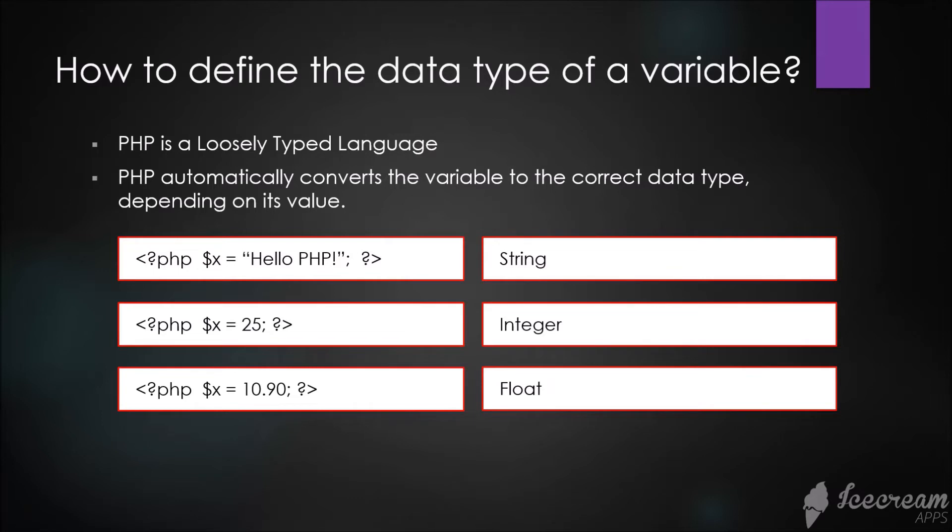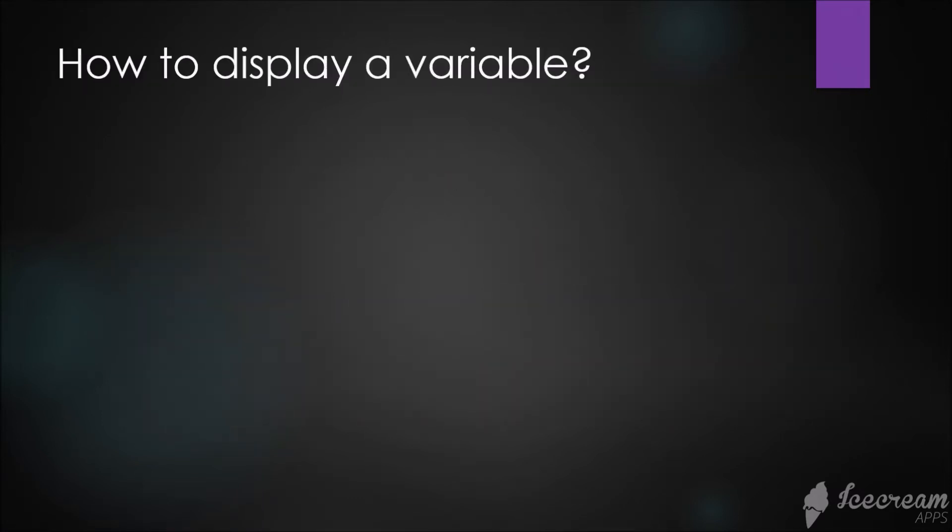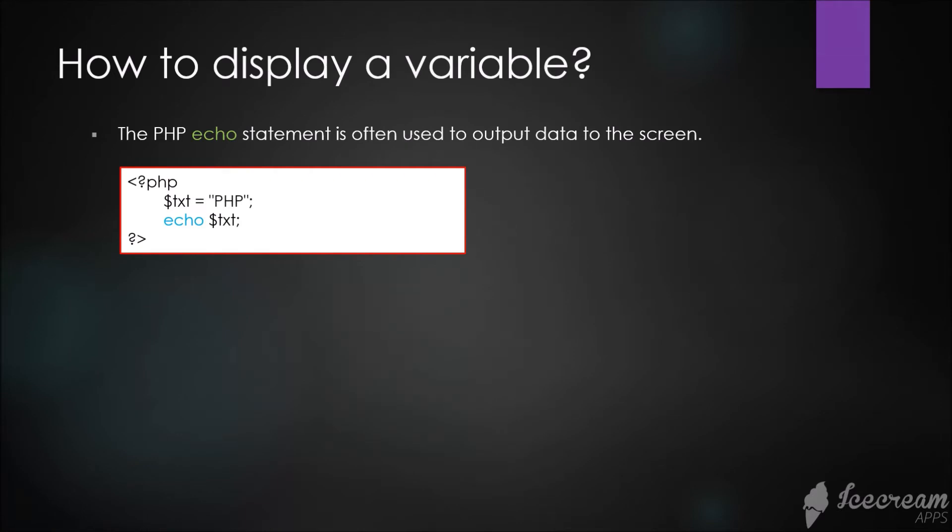How to display a variable? The PHP echo statement is often used to output data to the screen. In this example, we declare the text variable with a value of 'PHP', then in the second line we echo the variable.